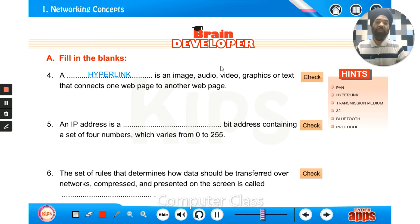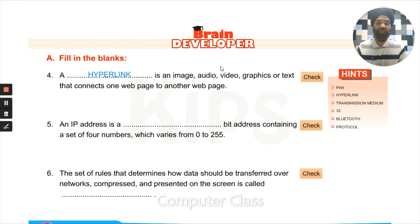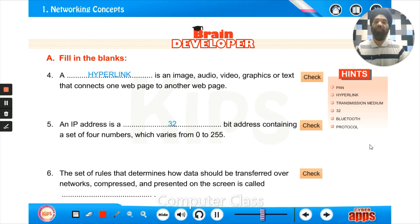An IP address is a blank-bit address containing a set of four numbers which varies from 0 to 255. The answer is 32-bit — a 32-bit address containing a set of four numbers.